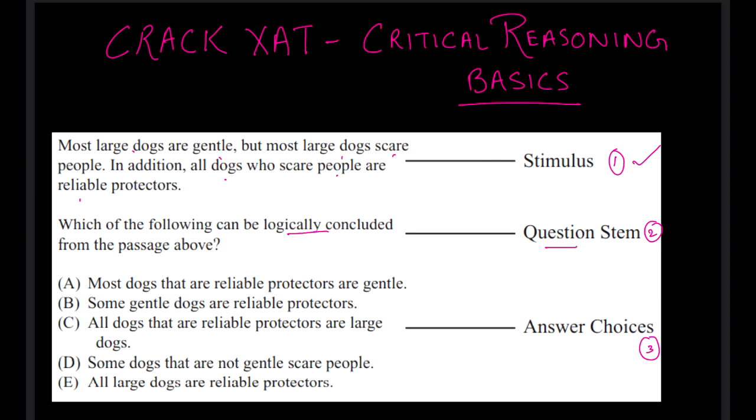You can get other types of critical reasoning questions. For example, stimulus will explain the whole situation and question stem will ask what should be the best course of action. So reading that first might not always benefit you. Yes, there can be a situation where you take a glance to know whether you need to find course of action or conclusion. That is good.